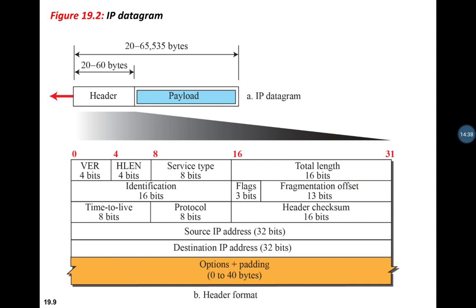The Protocol field is 8 bits. A datagram can carry packets belonging to any transport layer protocol such as UDP or TCP, or auxiliary protocols that use IP's services. When the payload is encapsulated at the source, the corresponding protocol value is inserted in this field. At the destination, this field is checked to determine to which protocol the data should be delivered. Multiplexing takes place at the source and demultiplexing at the destination.